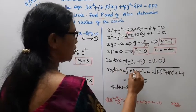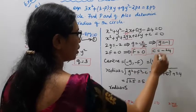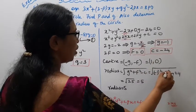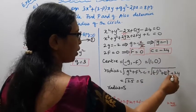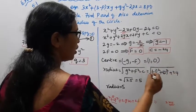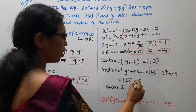The radius is √(g² + f² - c). That is √((-1)² + 0² - (-24)) = √(1 + 24) = √25 = 5.